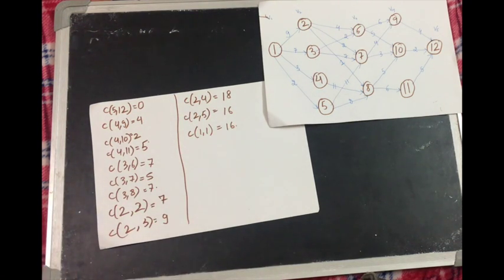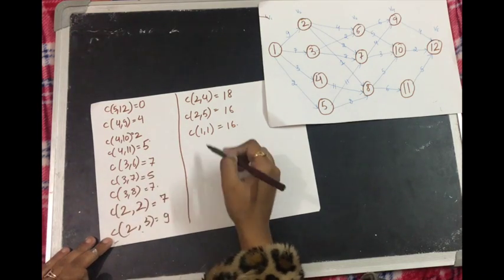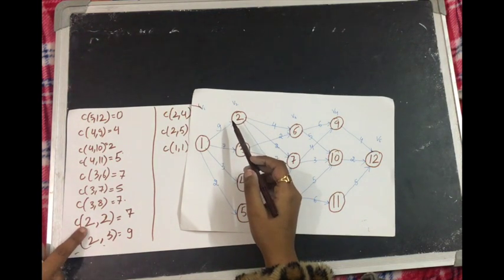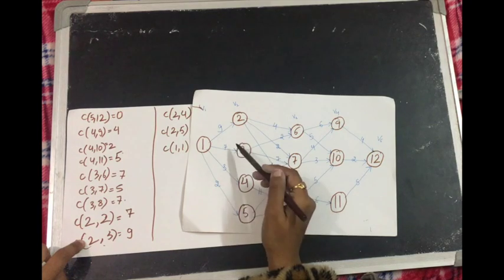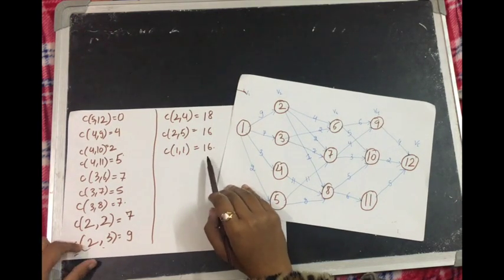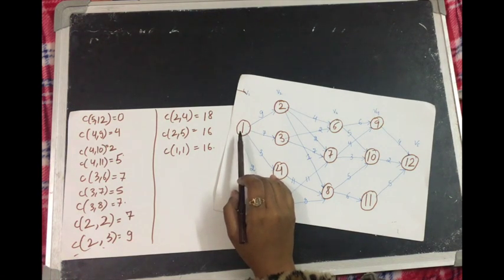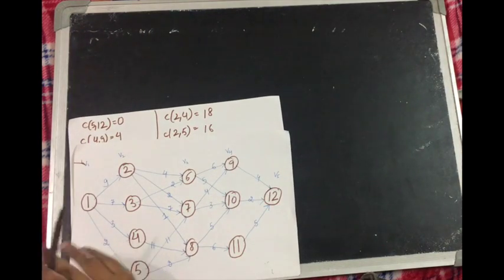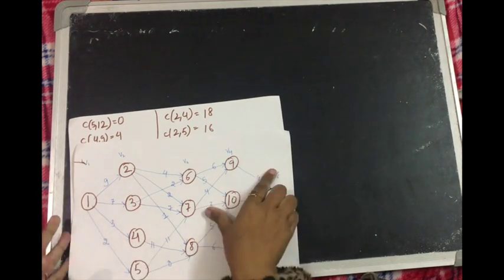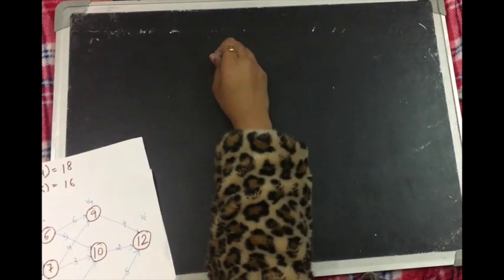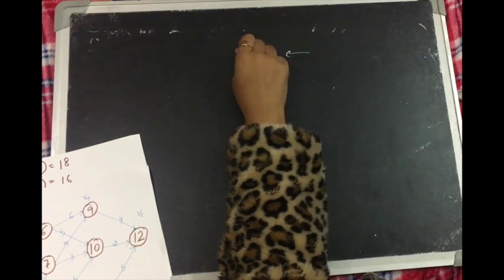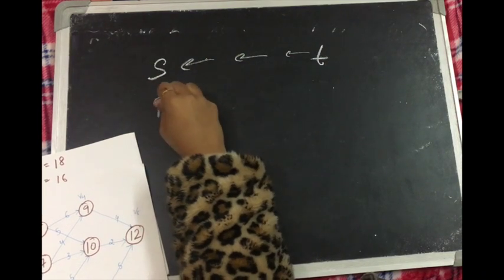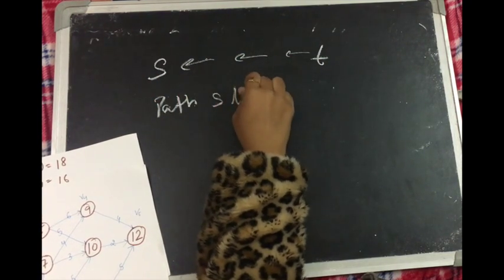Once you have found the costs for all stages, you've gone from sink to source through stages 5, 4, 3, 2, and finally stage 1 — finding the minimum for stage 1. Now what you have to do is construct the actual path from source to sink. Earlier we started from the sink and went backwards toward the source; now we use those computed values to make the optimal path from source to sink.